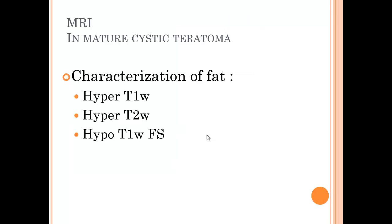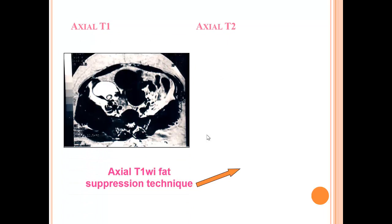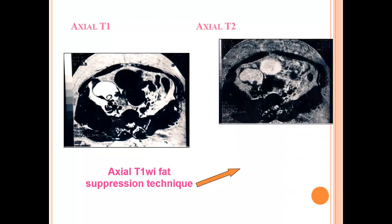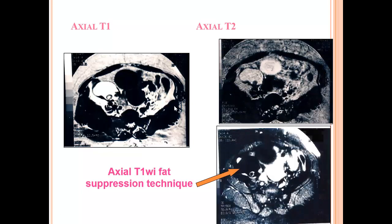On MRI, mature cystic teratoma has a typical appearance: hyperintense on T1, hyperintense on T2, and hypointense on fat suppression. In this case you can see the crown of a tooth present inside. Although on ultrasound it was completely anechoic, it still has a fat component — bright on T1, slightly bright on T2, and completely suppressed on fat suppression.